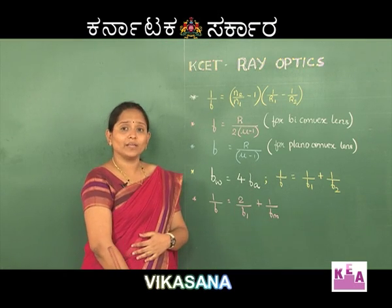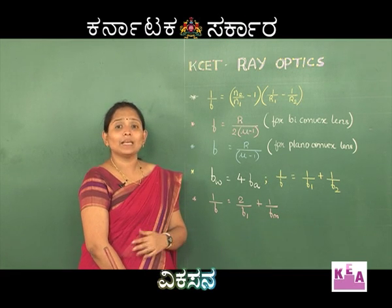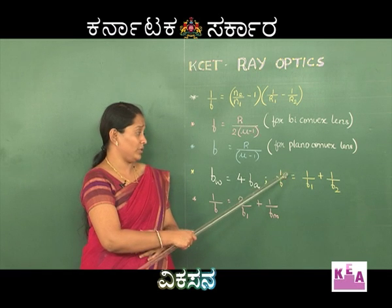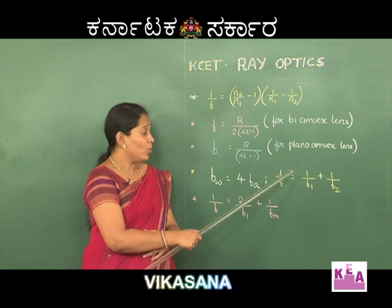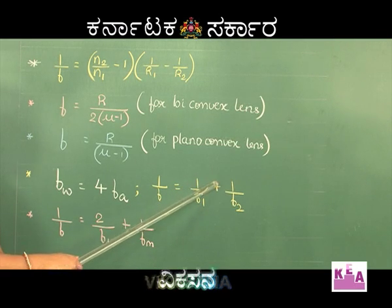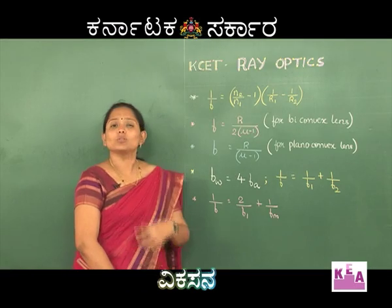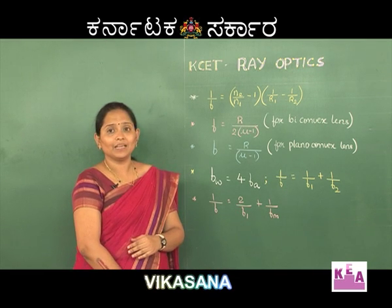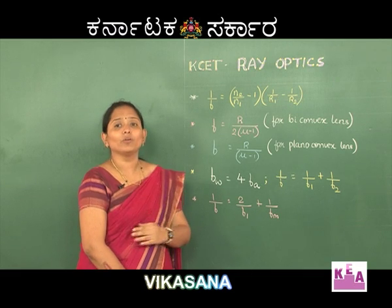Another topic is regarding two thin lenses in contact. The effective focal length of the two thin lenses in contact is given by 1/f = 1/f1 + 1/f2. Students, you may not have learnt about the next concept in the theory class — the silvering of a lens.